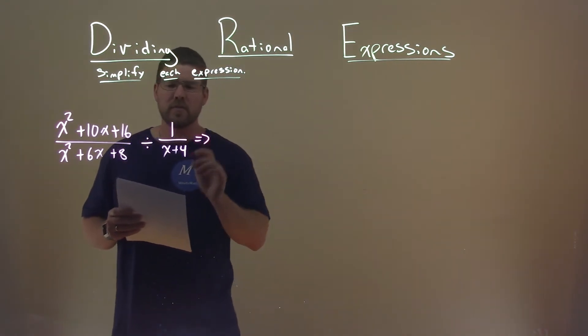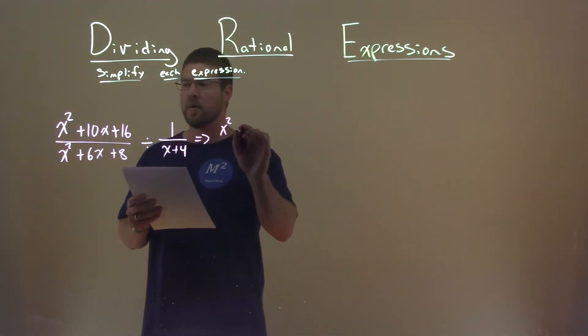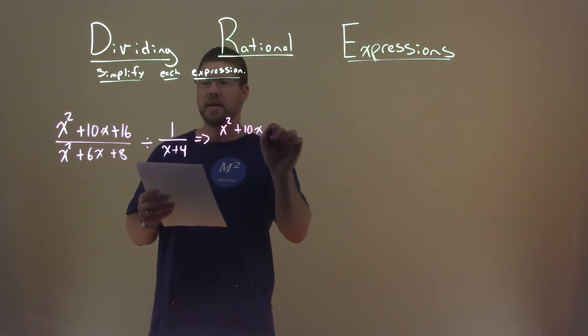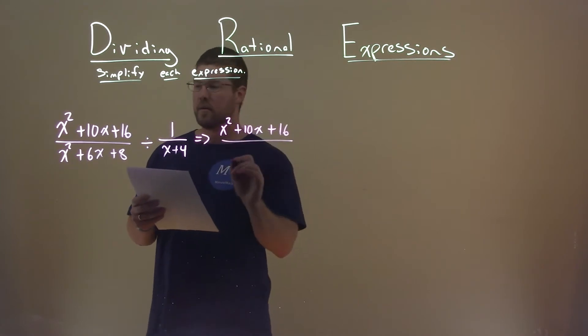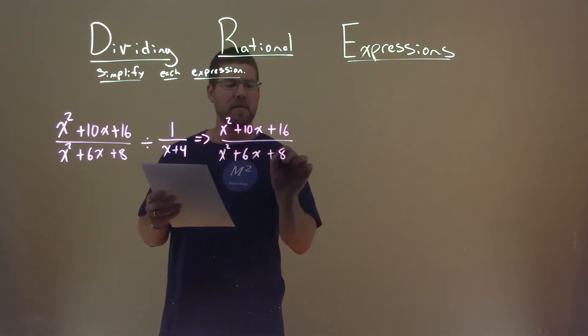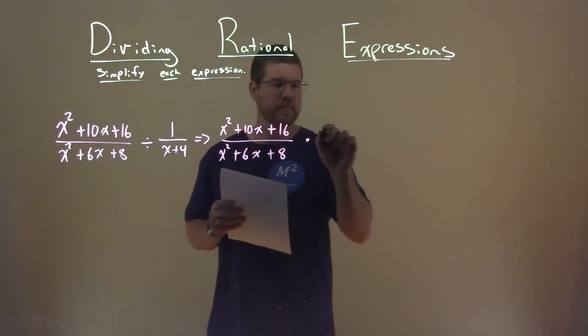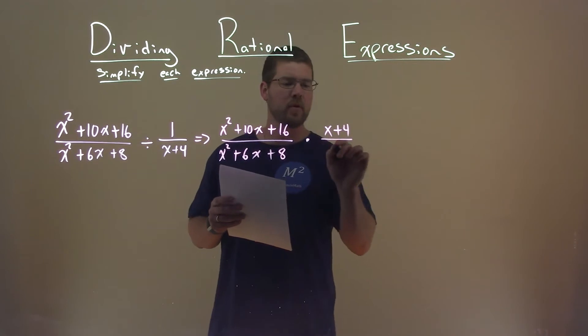I'm going to rewrite this instead of as a division problem, as a multiplication problem. So we rewrite the first part, x squared plus 10x plus 16 over x squared plus 6x plus 8, and instead of dividing, we're going to multiply, and we're going to flip the fraction. X plus 4 is in the numerator over 1.